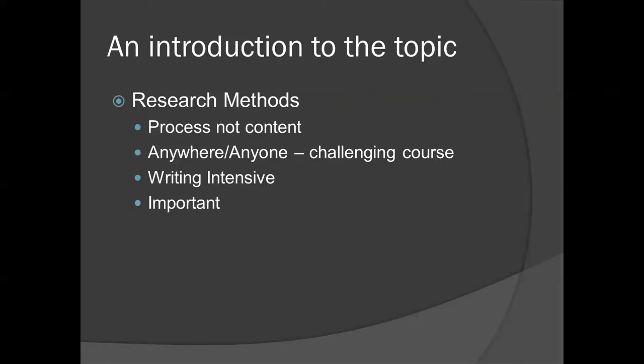Now let me introduce you to the topic of research methods. Research methods is a different course — probably the most different course you're going to run into in psychology. It's a process course, not a content course, and that's what throws everybody. All the other courses you've taken are content: abnormal psychology, you study what we know about abnormal psychology; social psychology, you study what we know about social psychology. In this course, we're not studying content, we're studying process — that is, how do we know what we know in psychology? That's what this course is about. That idea is very simple, but students don't understand it, and that causes problems when we get to the papers. I'll be coming back to that again and again.